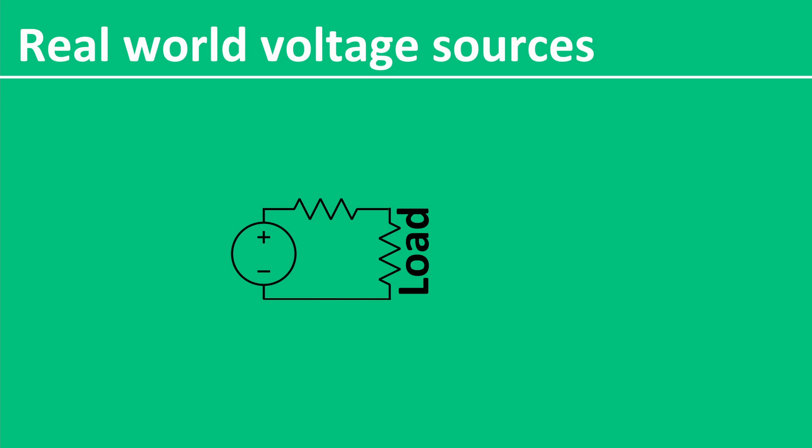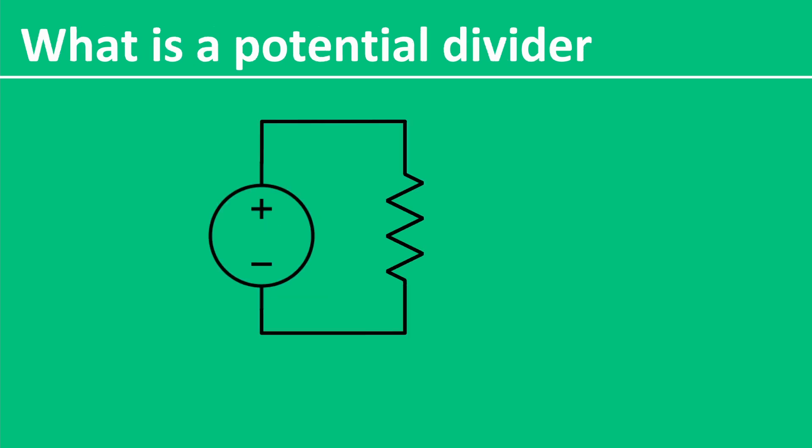But what is a potential divider? And why does it matter? Let's consider a simple circuit. We connect a resistor across a voltage source. At one end of the resistor, we have the input voltage, let's say 5 volts. And at the other end of the resistor, we have the ground, or 0 volts.